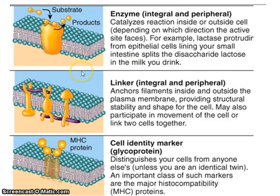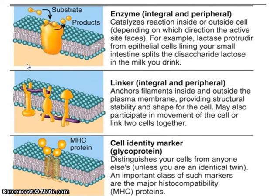Next are enzymes, which help increase the rates of reactions. They have an active site where the reaction takes place and can make reactions go thousands to millions of times faster. Then there are linker proteins, which attach the cell on the inside to different parts of the cell and on the outside to other cells. Finally, cell identity markers — all of our cells have MHC proteins that mark them as our own. Our immune system looks for cells without our MHC markers to identify them as foreign.